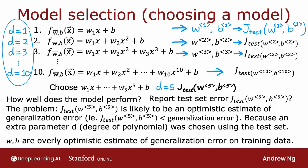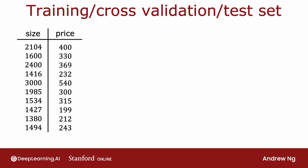Instead, if you want to automatically choose a model—such as deciding what degree polynomial to use—here's how you modify the training and testing procedure to carry out model selection. By model selection, I mean choosing among different models, such as these 10 different models you might contemplate using for your machine learning application.